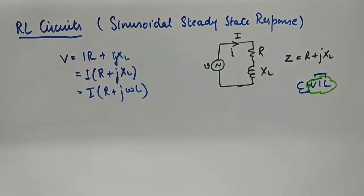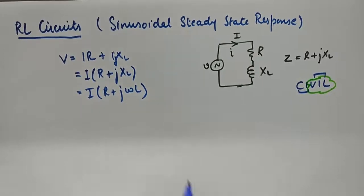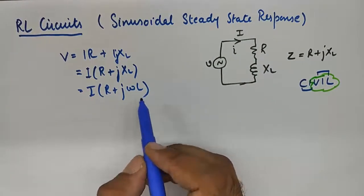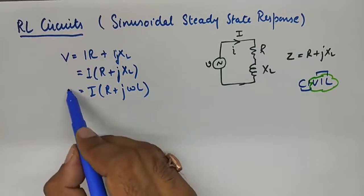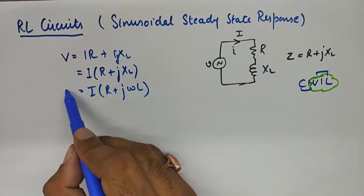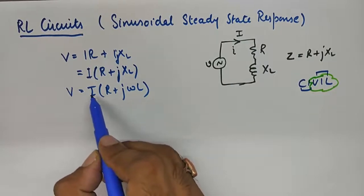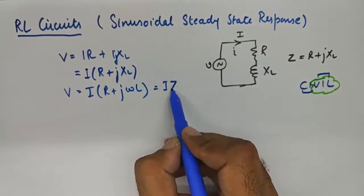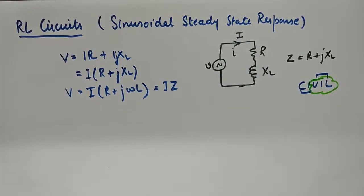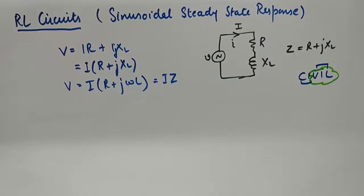This is more precisely what you are wanting to get. So my voltage is I into Z, as we formulated in the previous video, which is nothing but Ohm's law.